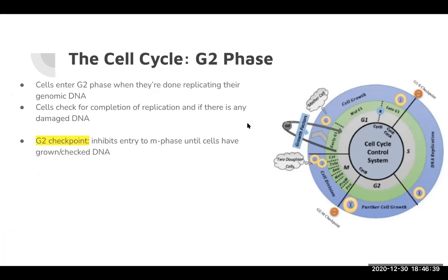G2 is another growth phase. Something I forgot to mention: each phase has different checkpoints. The cell is periodically checking up on itself, making sure that everything is going okay — that it has the right substrates, nutrients, energy. Those are called checkpoints. Checkpoints exist periodically throughout the entire cell cycle.